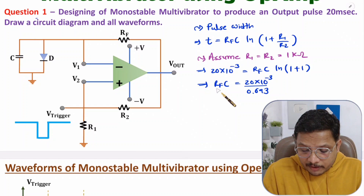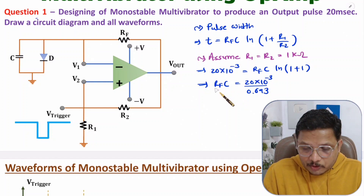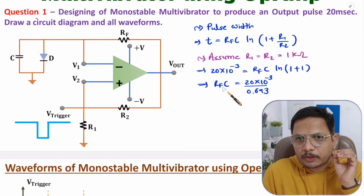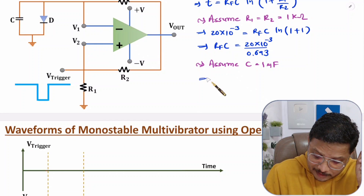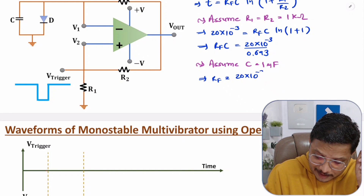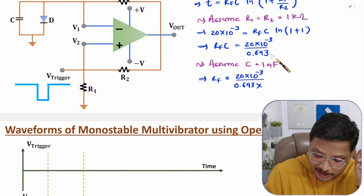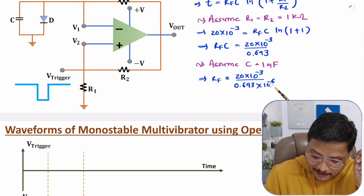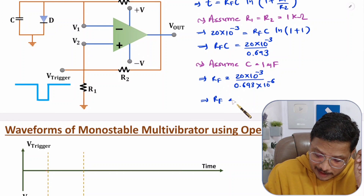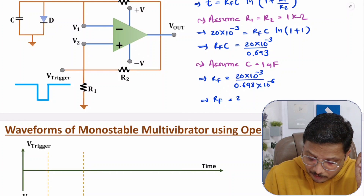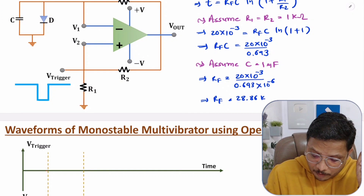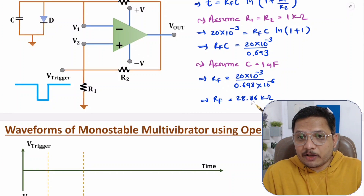Now we need to identify the values of RF and C. Out of these two we need to select a value for one component. Let us assume capacitance C = 1 micro-farad. Then RF = (20 × 10⁻³) / (0.693 × 1 × 10⁻⁶). Solving this in a calculator gives RF = 28.86 kilo-ohm. That is how we can identify the values of all the components.